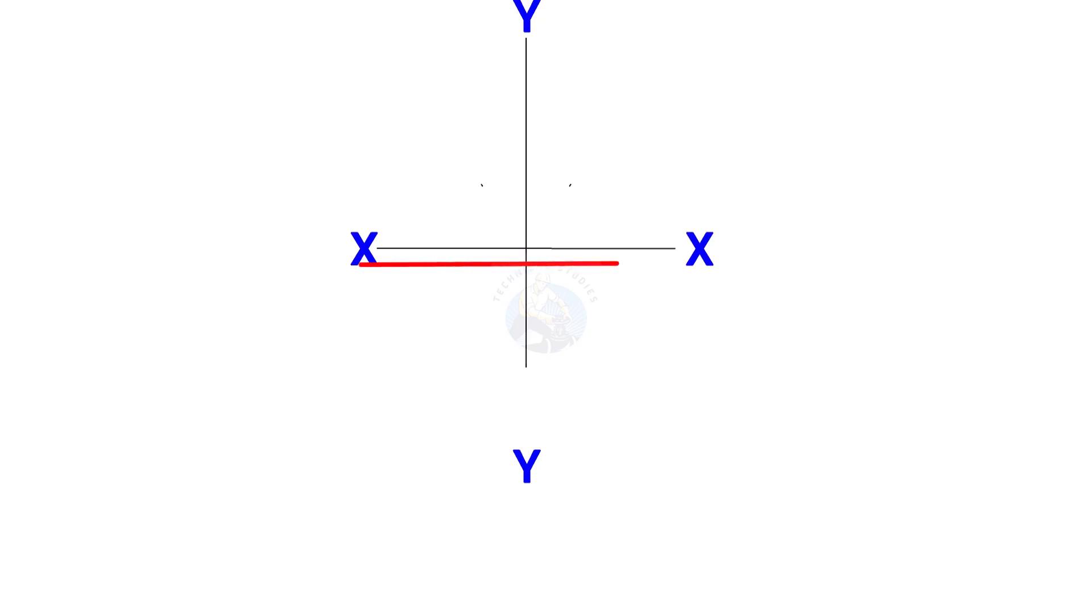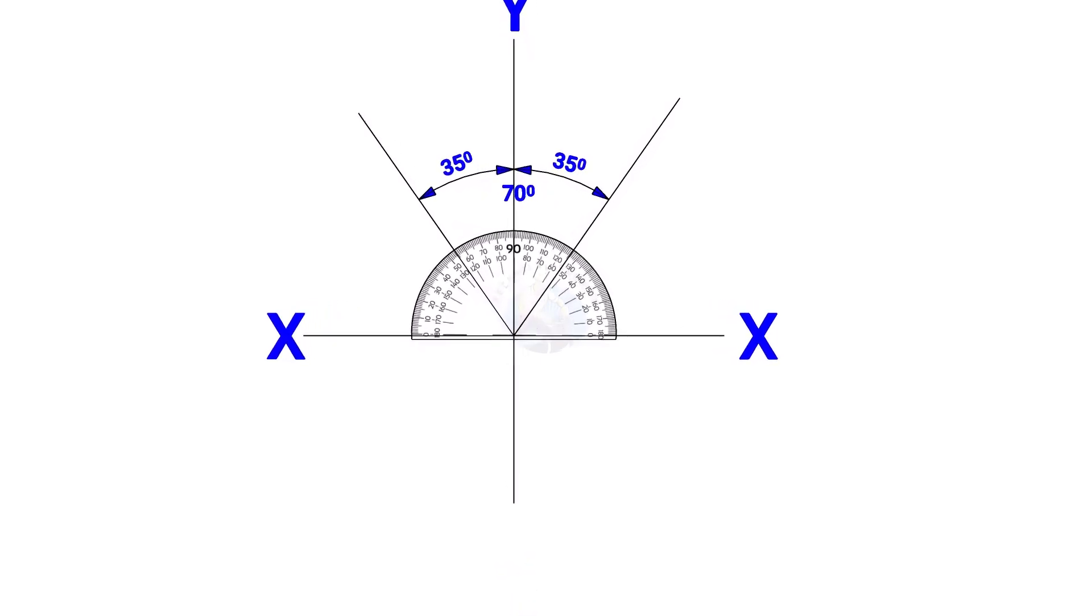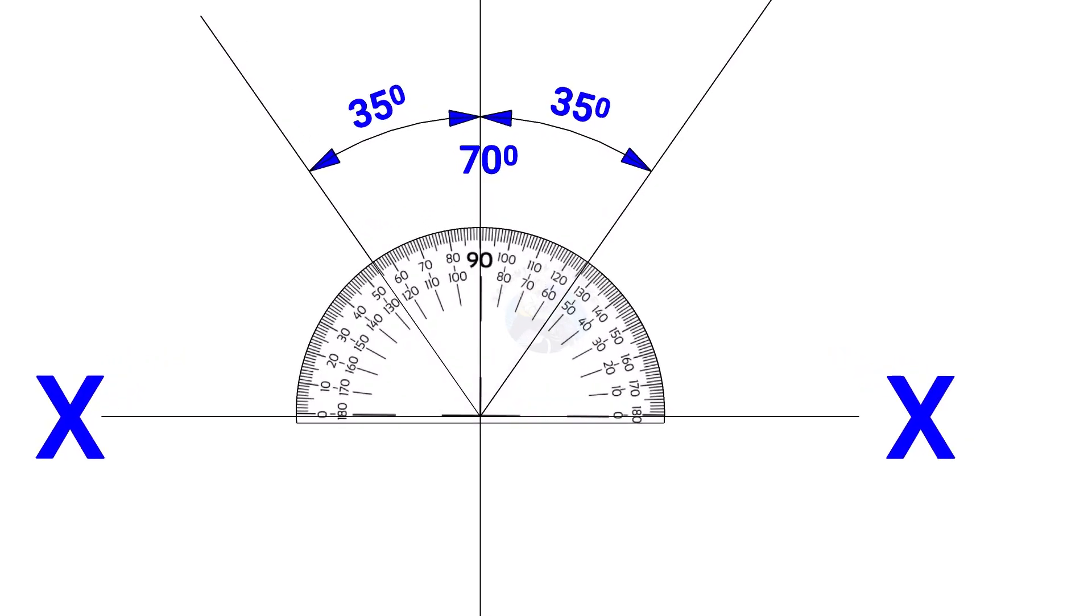Draw line XX and its perpendicular line YY. Since the including angle of the Y branch is 70 degrees, mark 35 degrees on both sides of the axis YY.